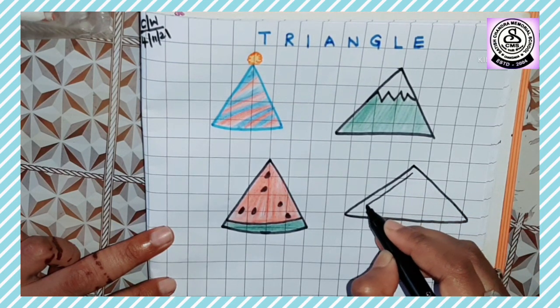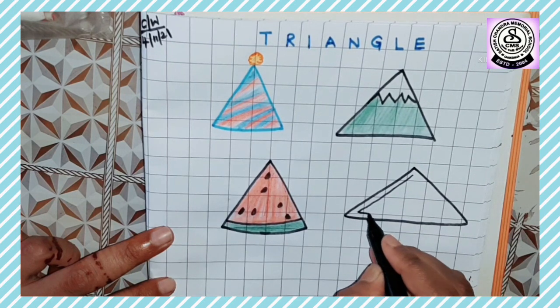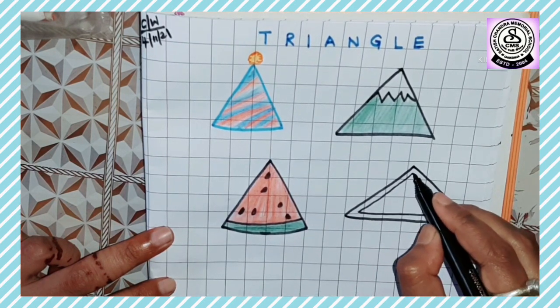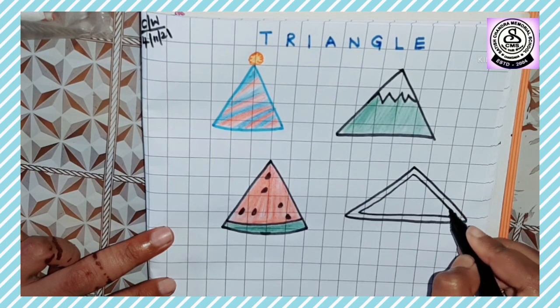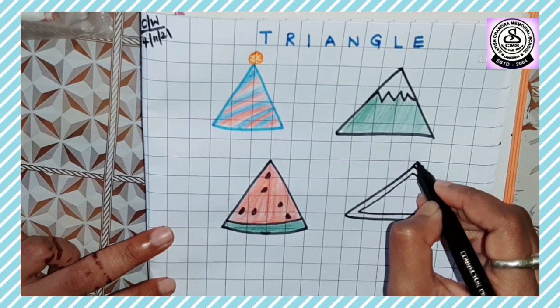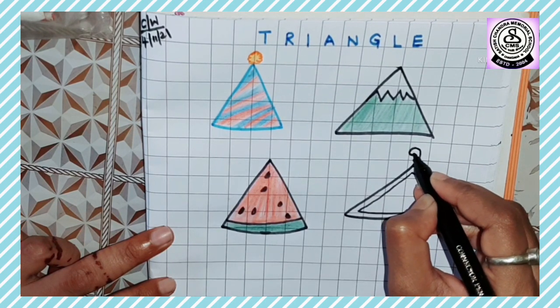Okay, slanting line or sleeping line and another slanting line like this. Okay, then on the top draw a hook like this.